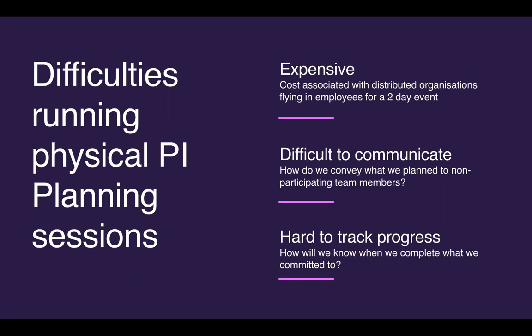The second challenge is that it's really difficult to communicate the value and the plan to members of the Agile Release Train who couldn't attend the session. Because it's so costly, not every member is sent to PI planning, so some people miss out on the value of that physical session. The third challenge is that it's really hard to track progress after the planning session is complete. We might be six weeks in and that physical program board is in an office on the other side of the world.